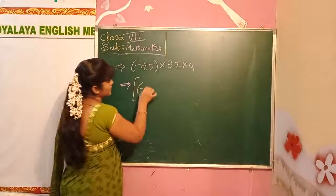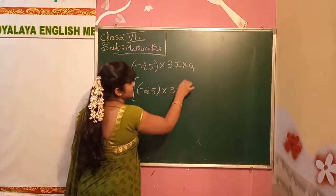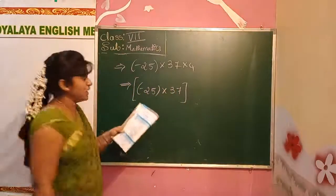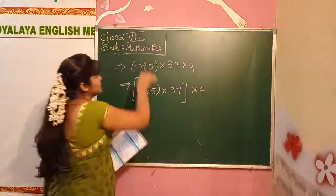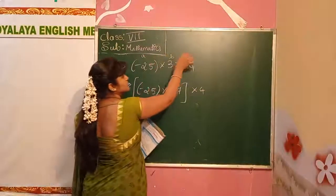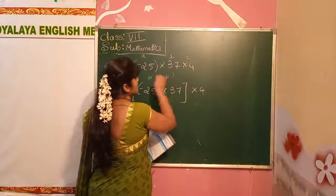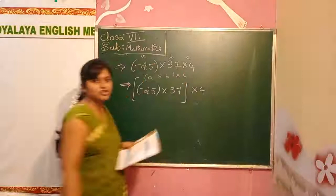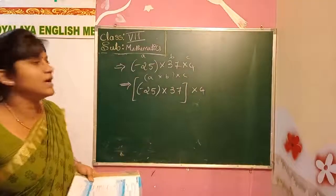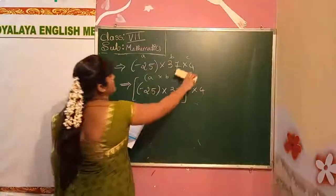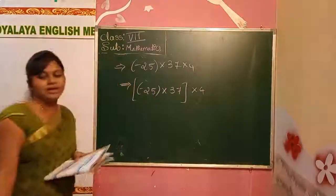We write it as: minus 25 into 37, then into 4. Taking A, B, C — so A into B into C. This is the associative property. Now you can calculate it in an easier format.